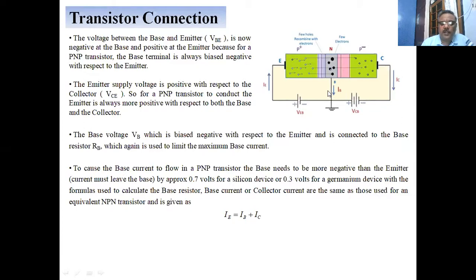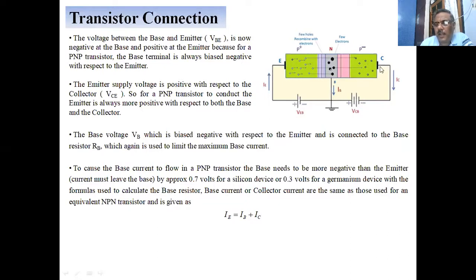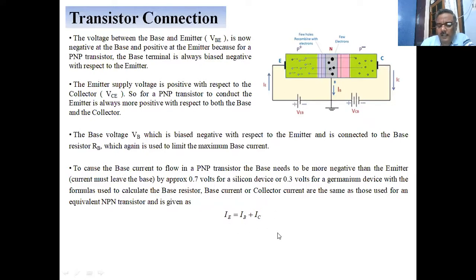The formulas need to be calculated for the base resistor. When the holes from the emitter enter the base region, some holes are lost in the base region and the rest are transmitted to the collector region. So the emitter current is equal to the sum of the base current and the collector current: IE equals IB plus IC, where IE is the emitter current, IB is the base current, and IC is the collector current.